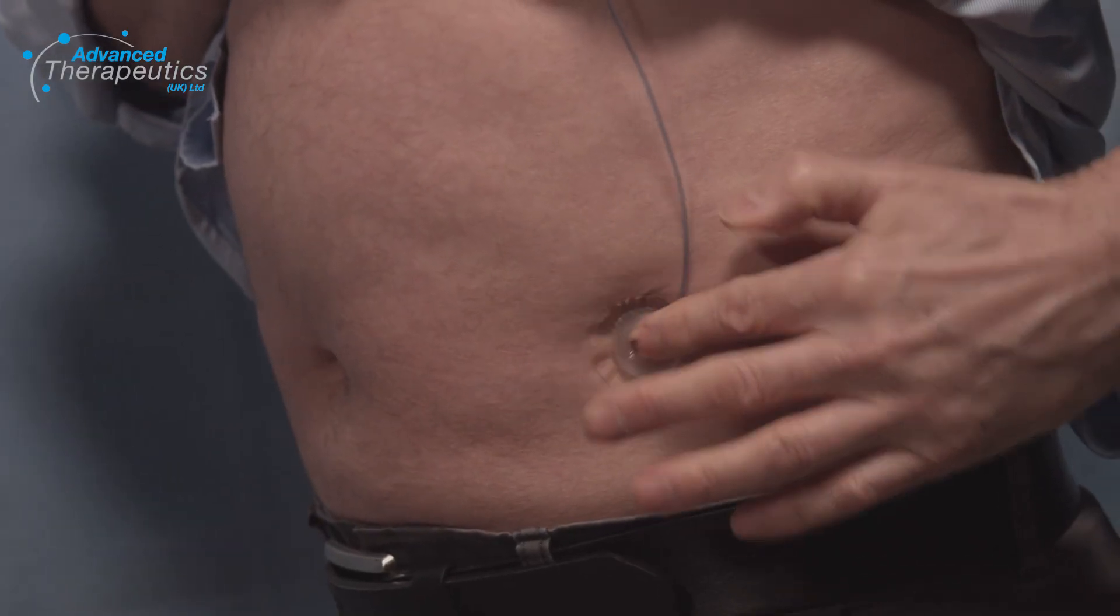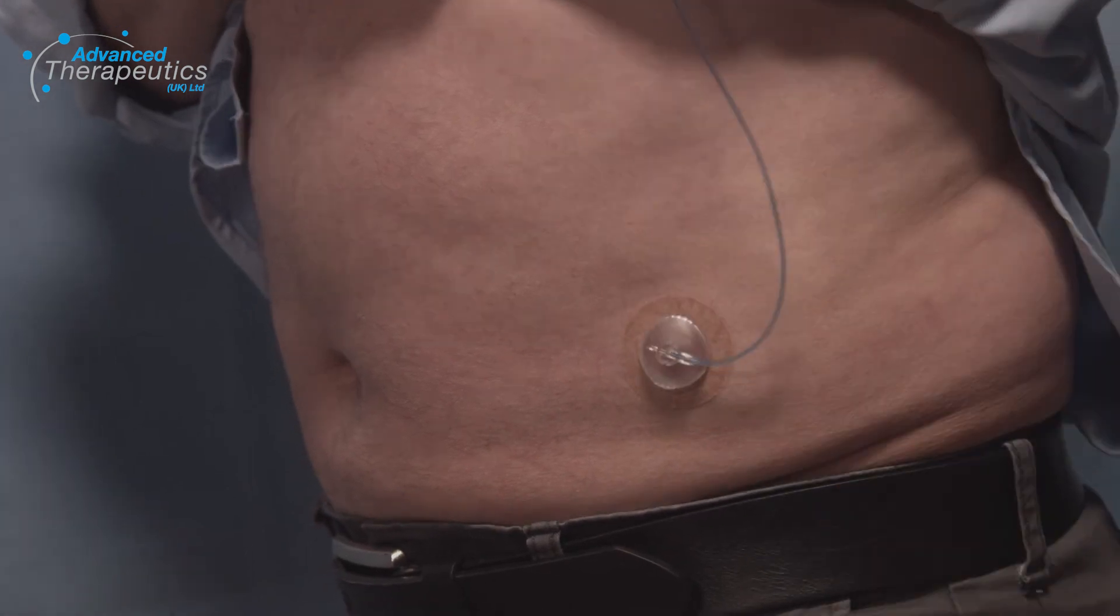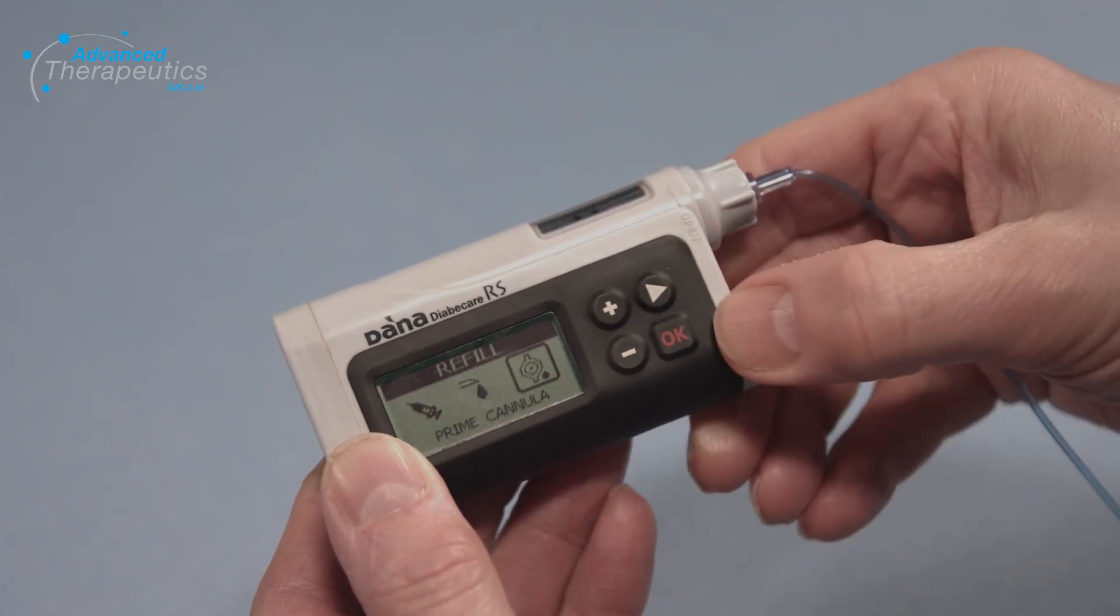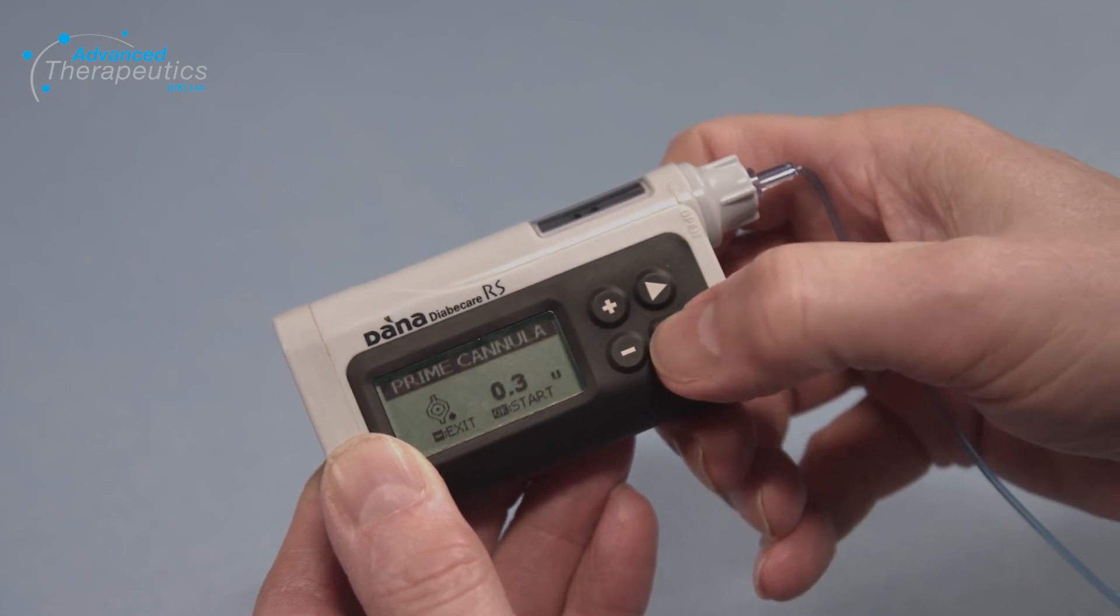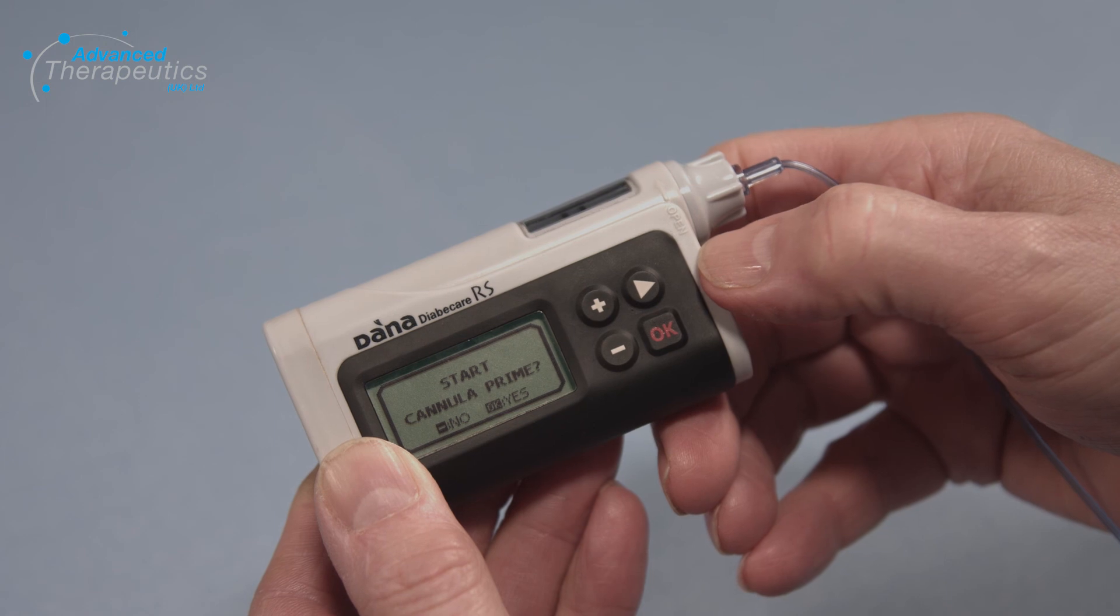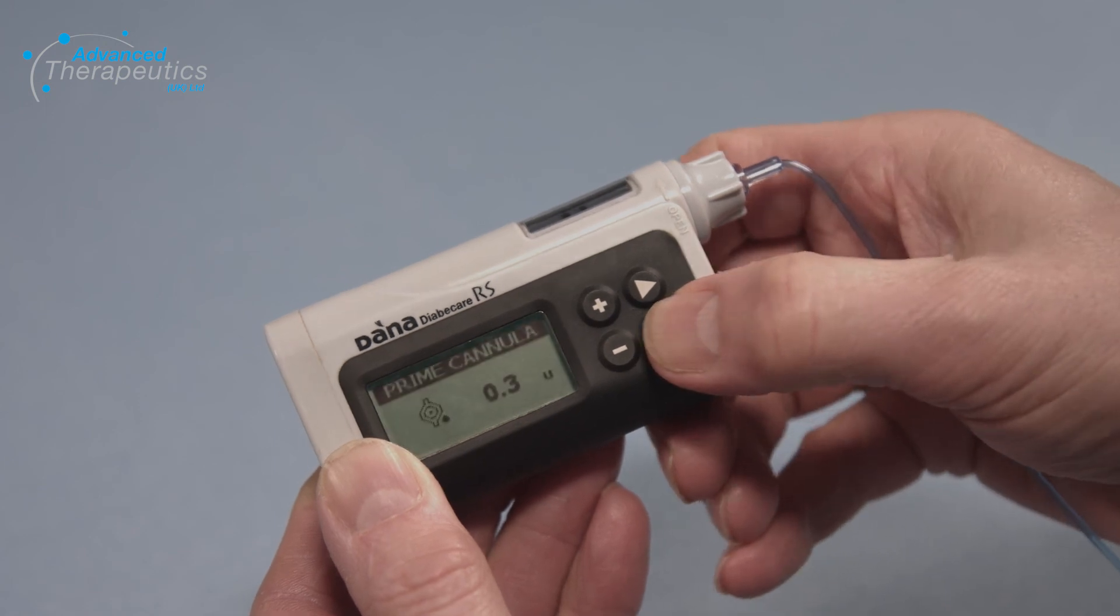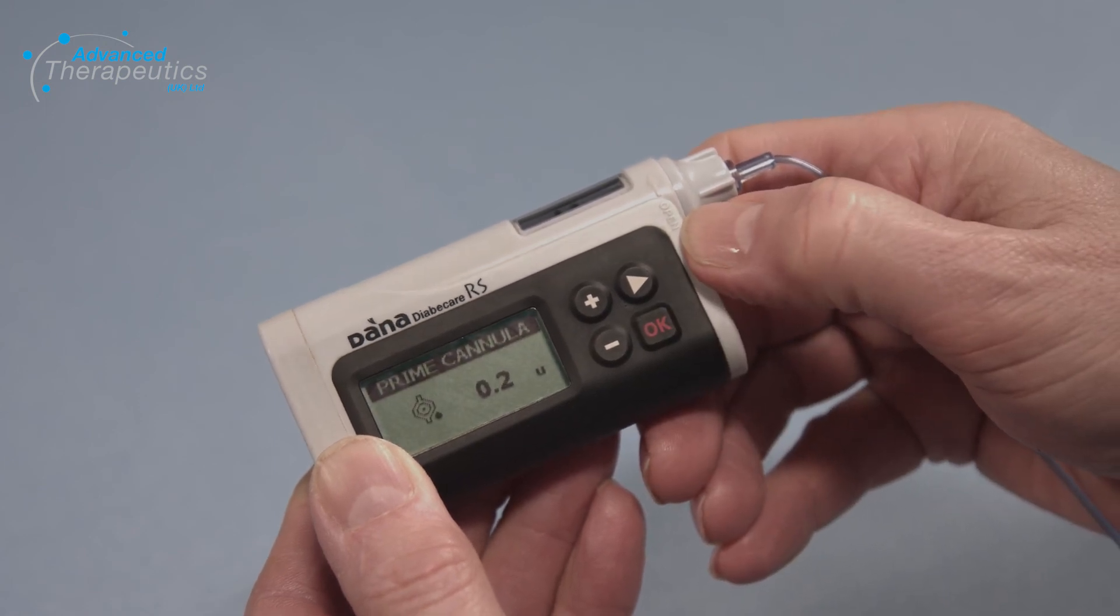Connect the tubing to the inserted cannula. Press the arrow to move to prime cannula, press OK and you will see the prime volume, 0.3 units for a 6mm cannula. Press OK and then OK again to prime. The pump is now ready.